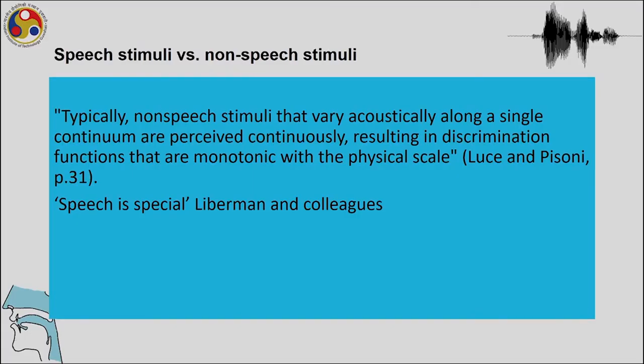Categorical perception is important because typically non-speech stimuli vary acoustically along a single continuum and are perceived resulting in discrimination functions that are monotonic with a physical scale. However, as Liberman and colleagues showed, speech is special. A lot of subsequent research has shown that speech perception can also be continuous. However, this lecture does not cover the greater details of perception research.